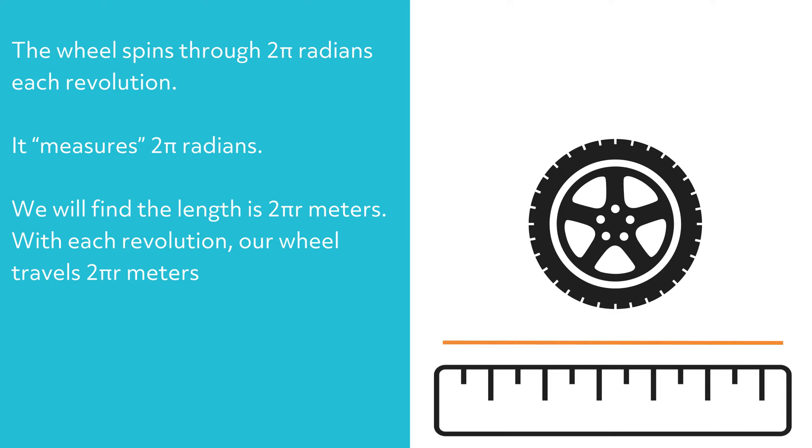So, with each revolution, our wheel travels 2 pi r meters. To convert from minutes to seconds, recall there are 60 seconds in 1 minute.